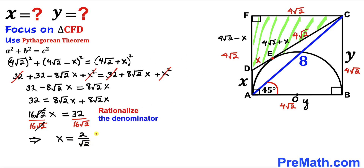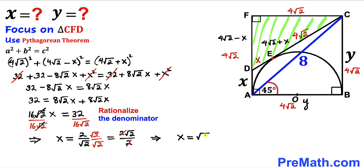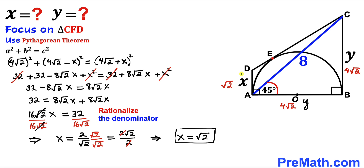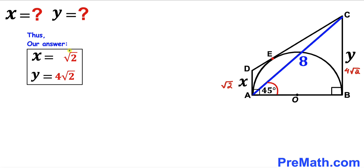Rationalizing the denominator by multiplying and dividing by √2: X = (2·√2) / (√2·√2) = 2√2 / 2. The 2s cancel, giving X = √2 units. So our final answers are X = √2 units and Y = 4√2 units.